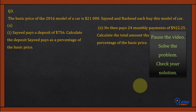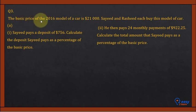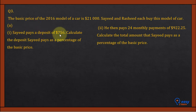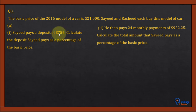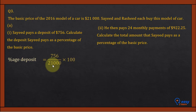Question 3: The basic price of a 2016 model car is $21,000. Sayed and Rashid each buy this model. Part A, Part 1: Sayed pays a deposit of $756. We need to calculate this as a percentage of the basic price. Percentage deposit = 756 / 21,000 × 100 = 3.6%. So Sayed pays 3.6% of the basic price as his deposit.